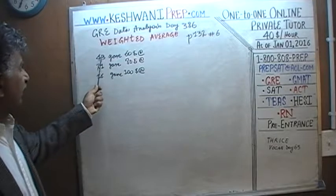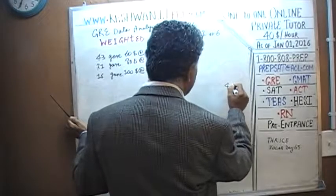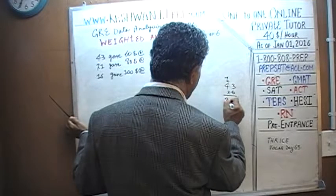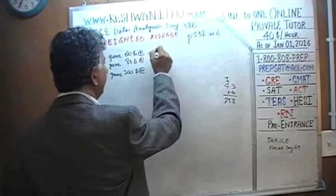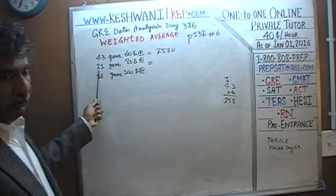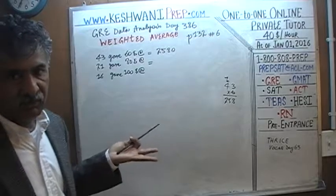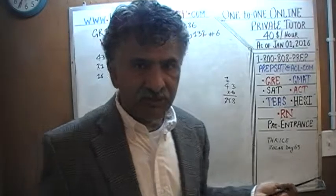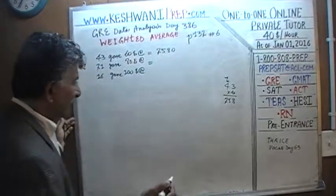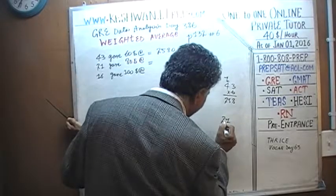Let's find out, shall we? 43 times 60: 43 times 6 is — 8, carry 1, 24 plus 1 is 25 — so this amount is 2,580. Now 21 times 80: 20 times 8 is 160, and 21 times 8 is 168, so with the trailing zero it's 1,680.